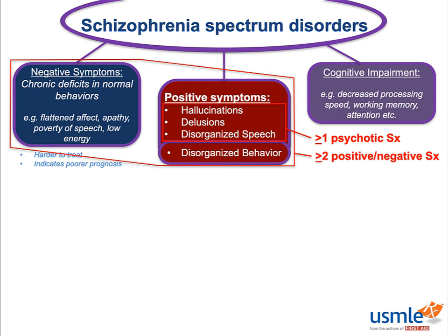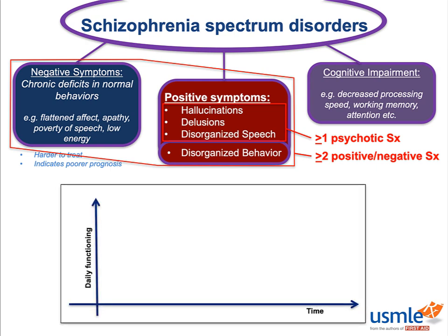That covers the three main features of schizophrenia, but where people mess up on Step 1 is the timing. I'm going to go over the natural history of schizophrenia. It doesn't always work like this, but this is the classic course that schizophrenia takes.